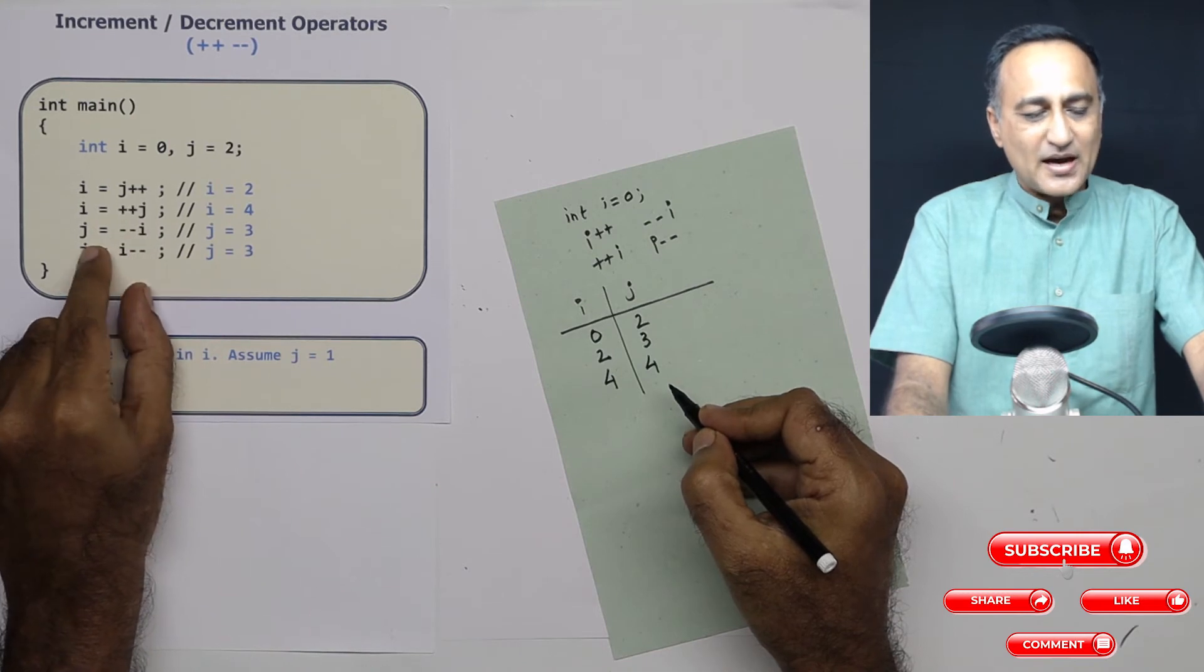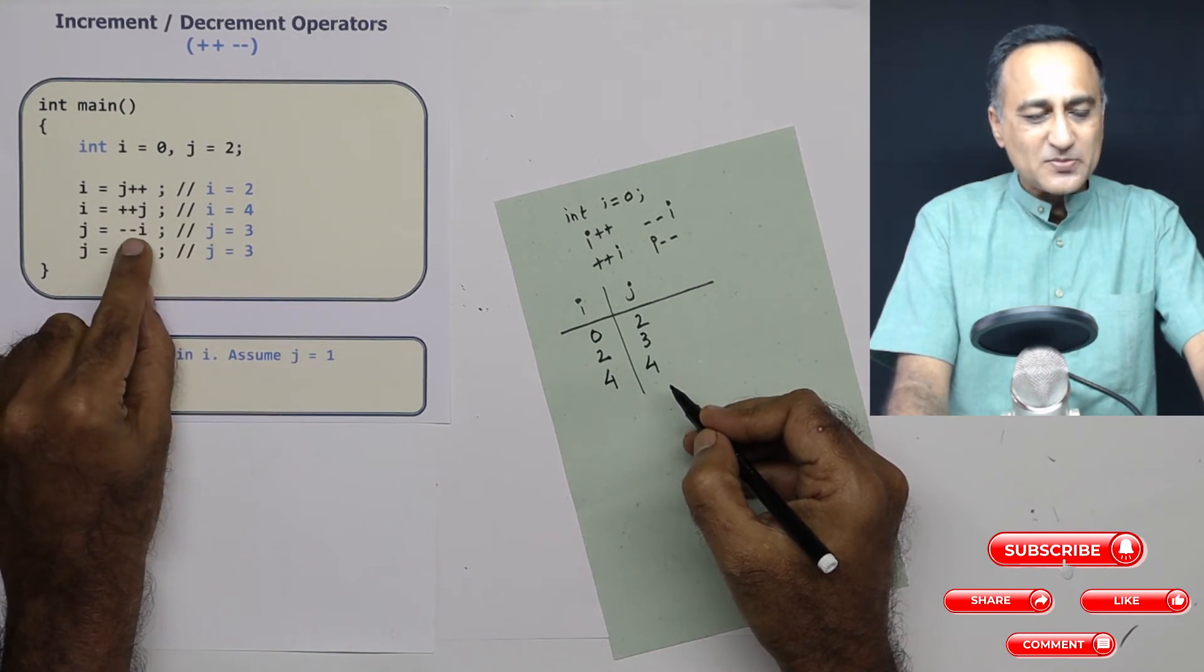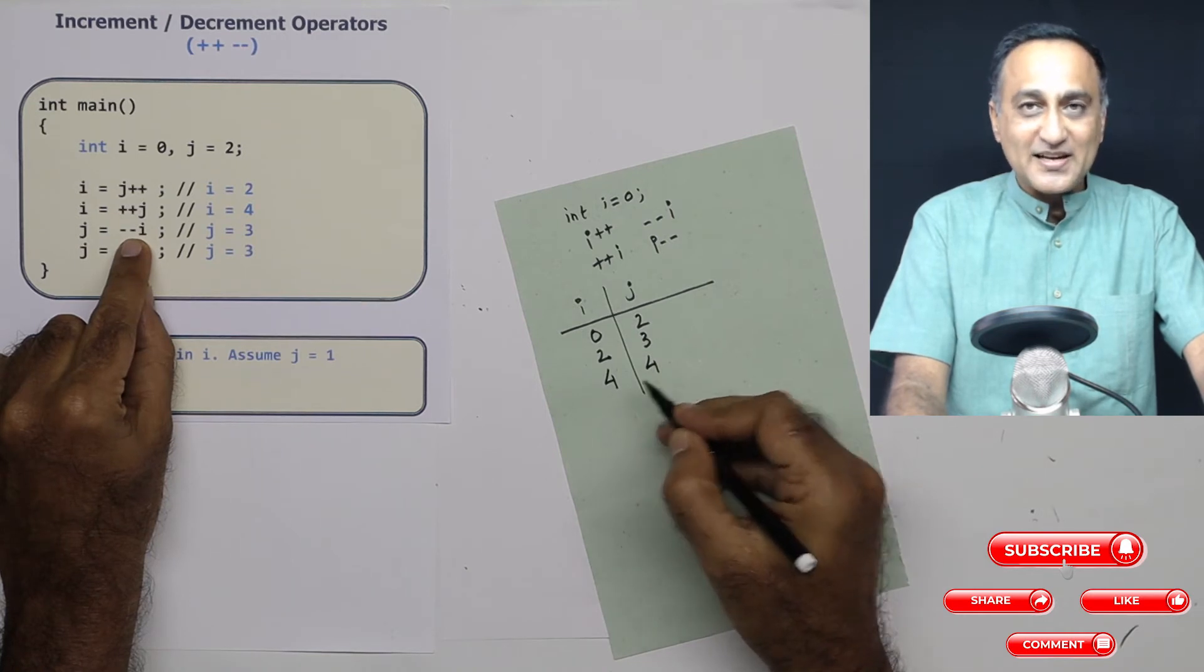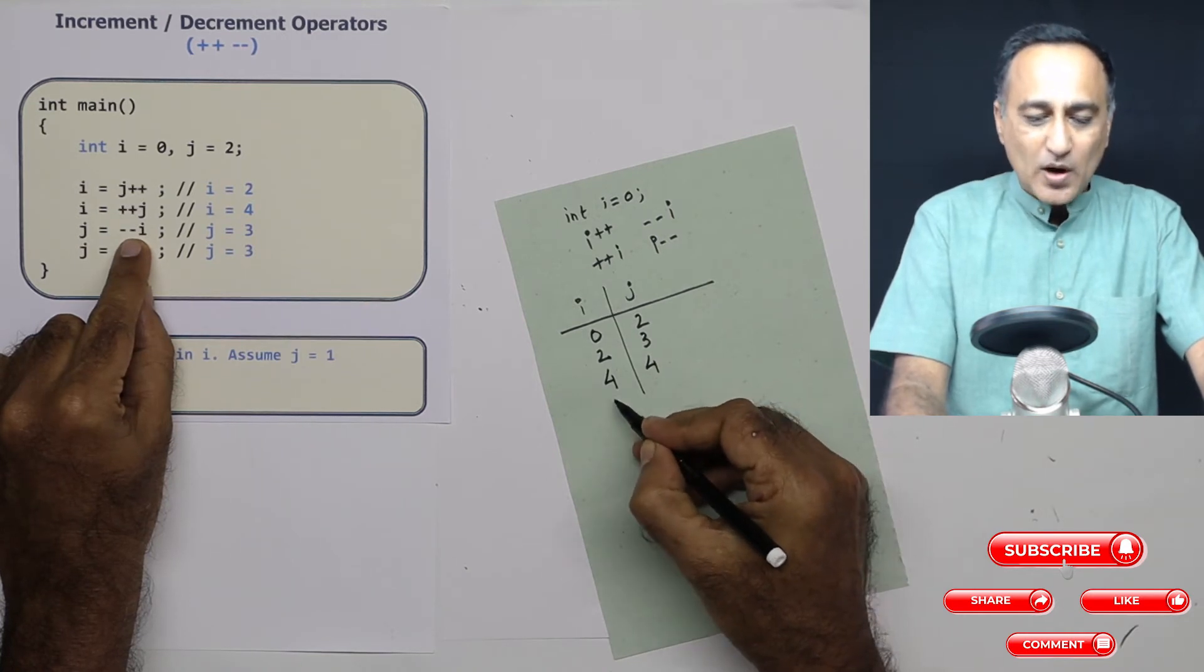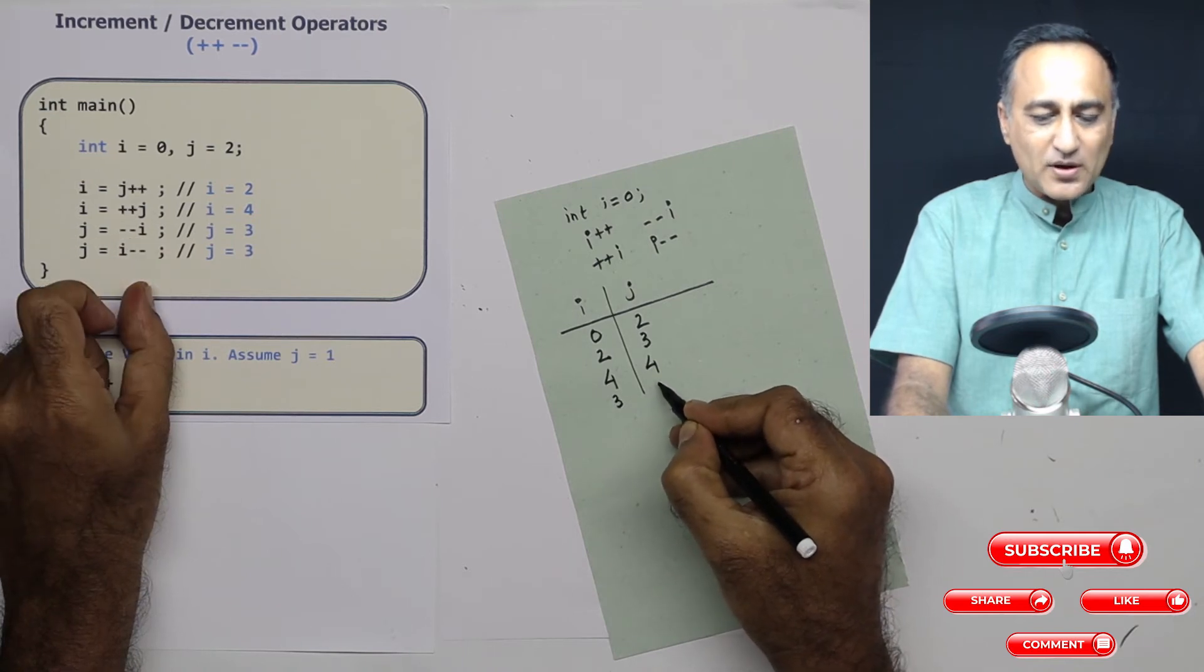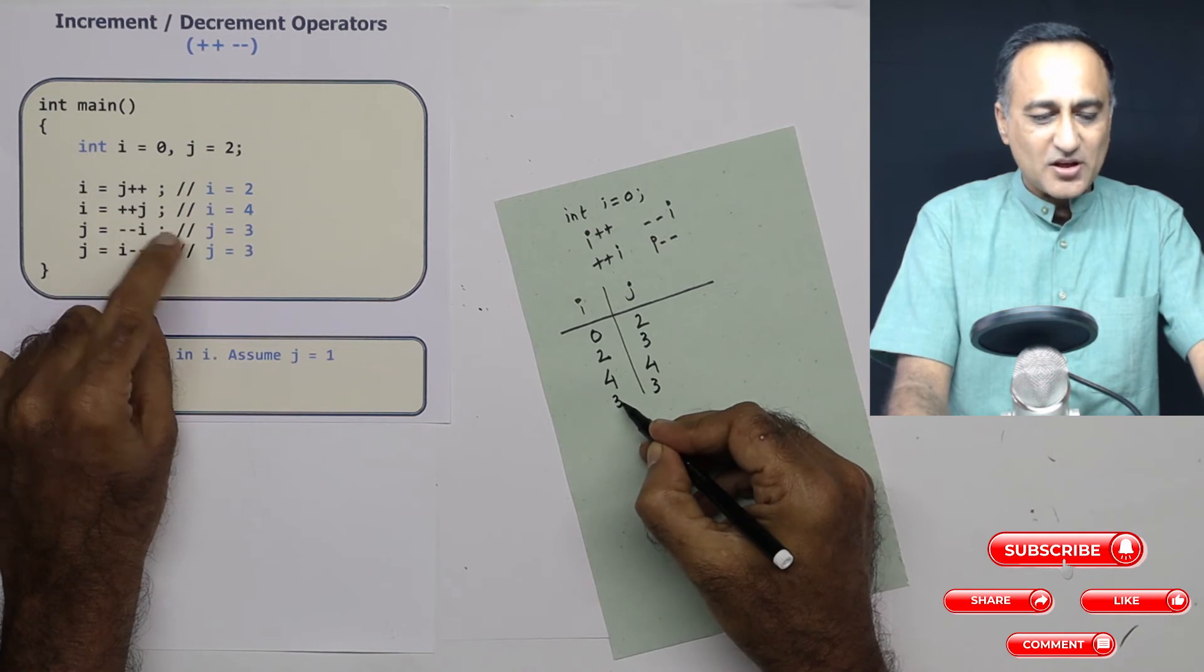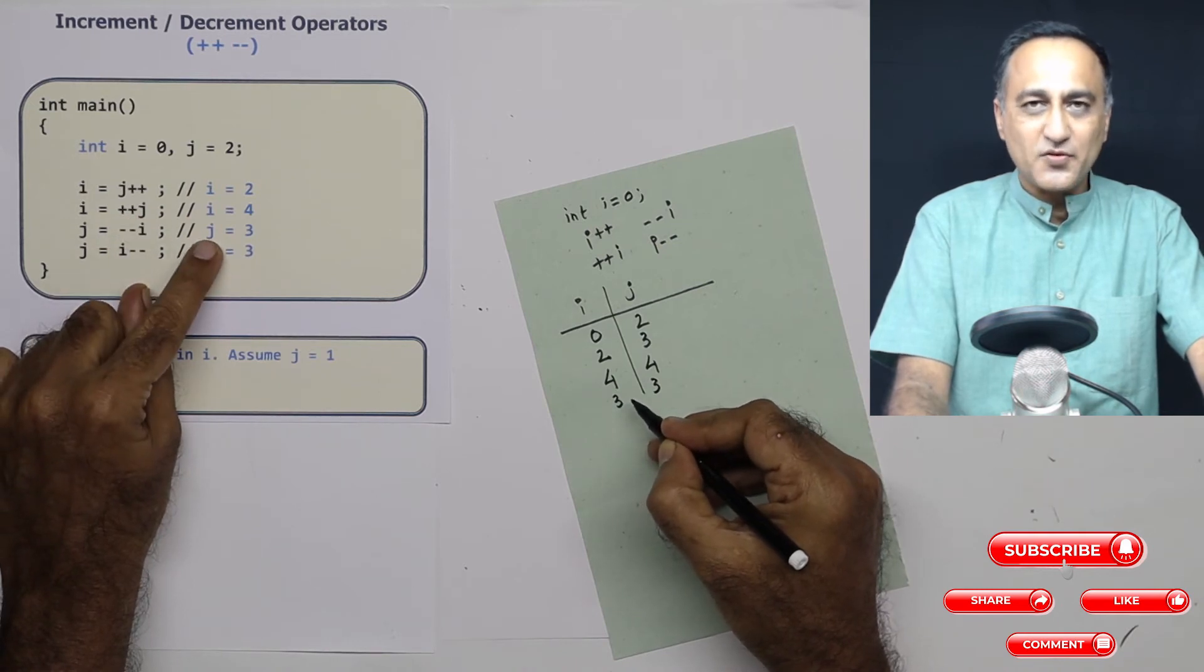In the third step, j is assigned --i. Since I'm reducing the value of i first and then giving it to j, i first becomes 3 and this value gets copied to j. So j is 3, i is 3. That's why j is shown as 3 here.